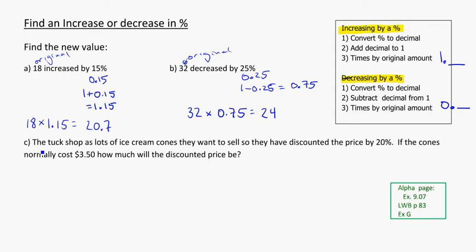An example of a word problem here. A tuck shop has lots of ice cream cones they want to sell, so they've discounted the price by 20%. So looking for keywords here, they've discounted the price by 20%. Well, discount, is that an increase or a decrease? So I know this is going to be a decrease in percentage. If it normally costs, that's my original. How much will the discounted price be? So I need to decrease 350 by 20%.